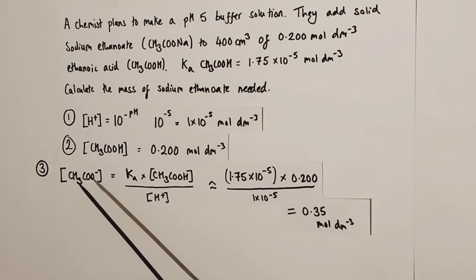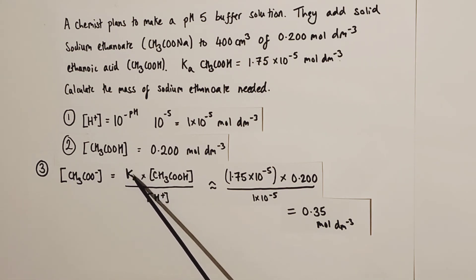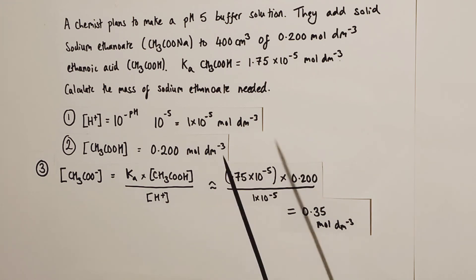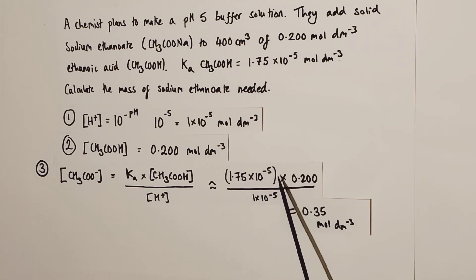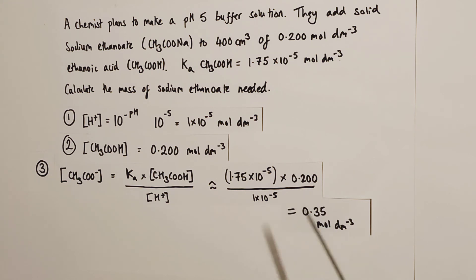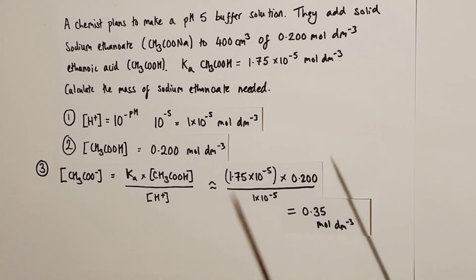We now apply the rearranged Ka expression: [A-] = Ka × [HA] ÷ [H+]. That's (1.75 × 10⁻⁵ × 0.2) ÷ (1 × 10⁻⁵), giving a concentration of ethanoate ions of 0.35 mol/L.